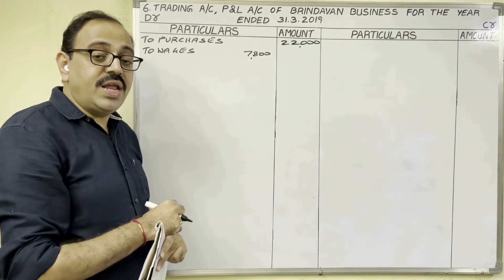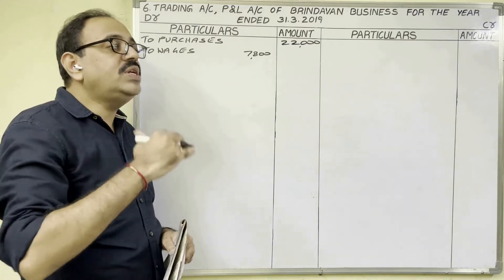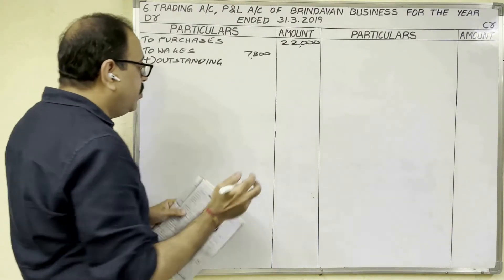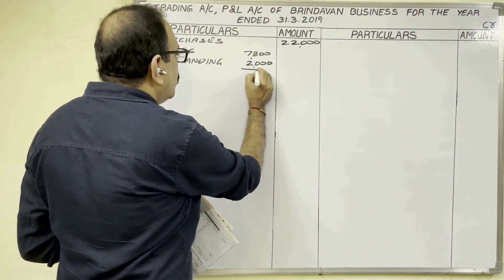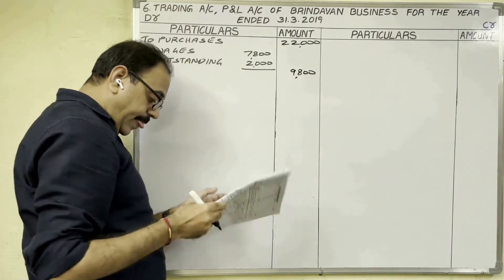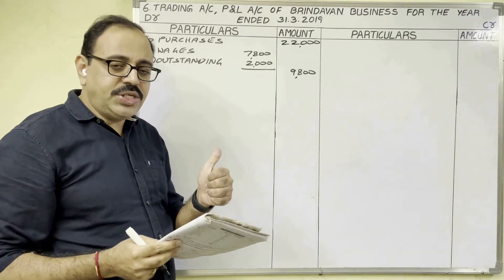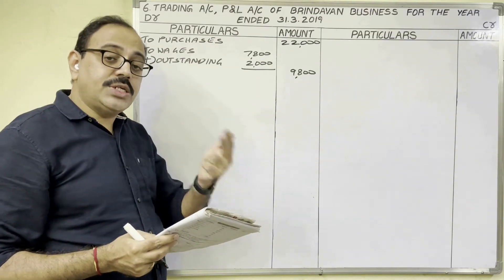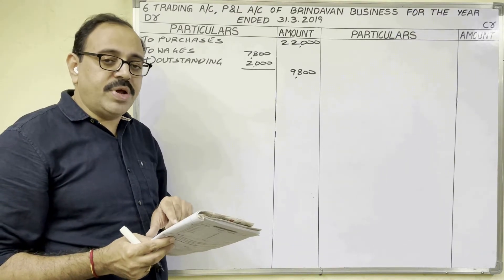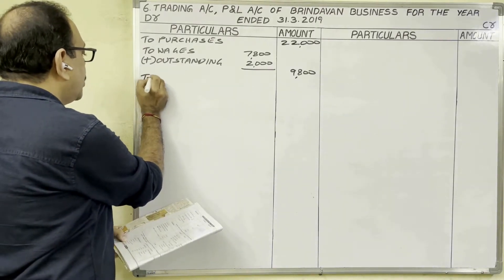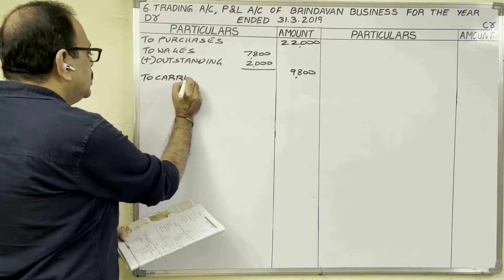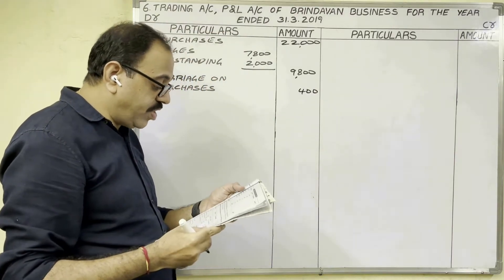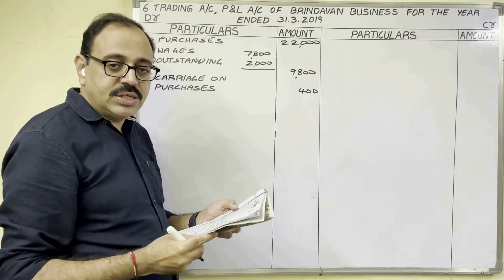Outstanding wages means we have to pay, so we add it to wages. Wages amount is 7,800 in the inner column, plus outstanding wages 2,000 rupees, total in outer column is 9,800 rupees. Next, carriage on purchases is a direct expense on the trading account debit side — 400 rupees. Carriage outwards or carriage on sales are indirect expenses on the P&L account debit side.